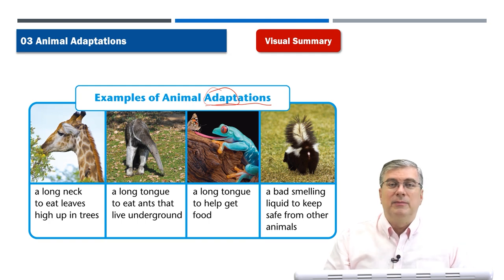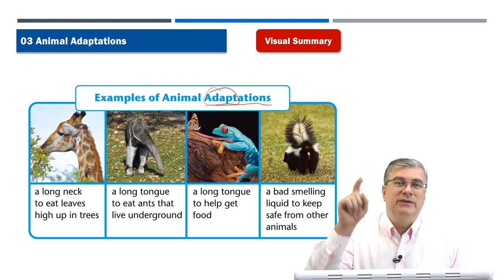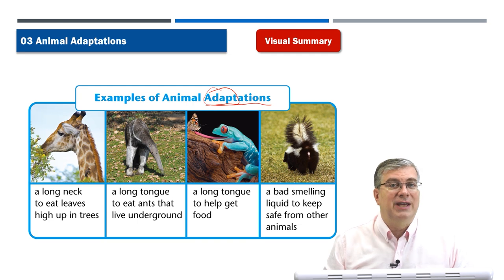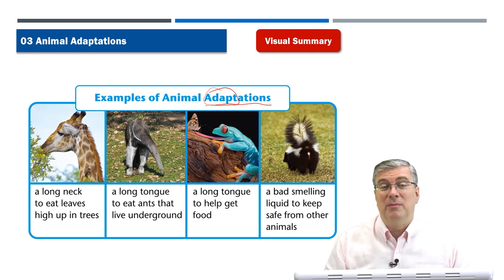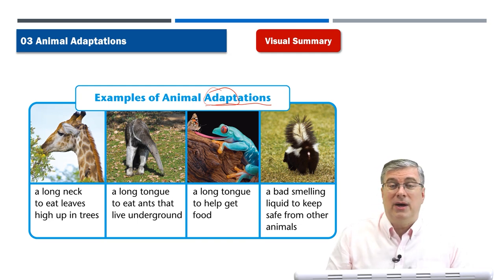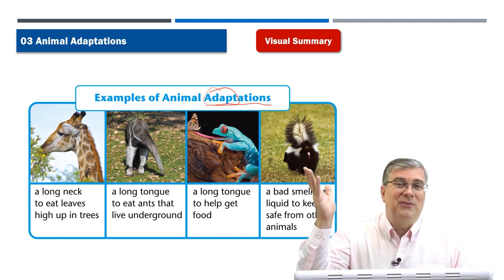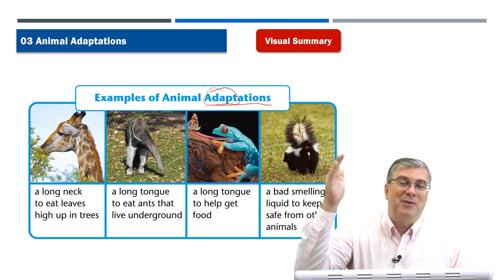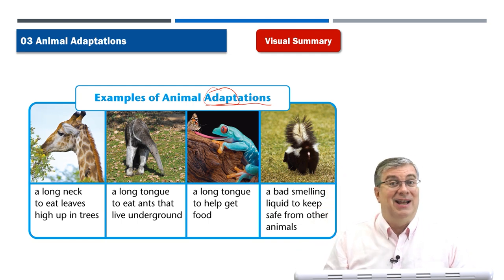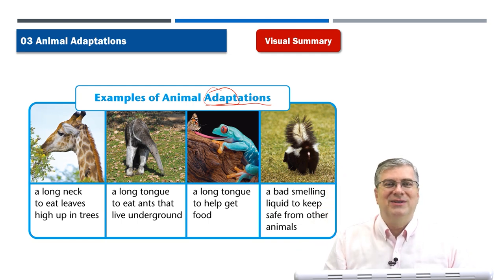But giraffes, because of their long neck, can reach up into the trees — other animals can't get there. So giraffes don't have to worry about fighting with other animals for food on the ground. They've got all the food they want up in the trees. That's one way that giraffes have adapted to their environment.